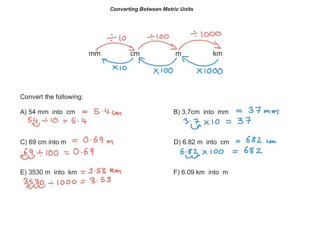Now: 6.09 kilometres into metres. We are converting larger units — kilometres — into smaller units — metres. When converting larger units into smaller units, I multiply. To convert kilometres to metres, I multiply by 1,000. So 6.09 multiplied by 1,000 — I move the decimal three places to the right — equals 6,090. So 6.09 kilometres is equivalent to 6,090 metres.